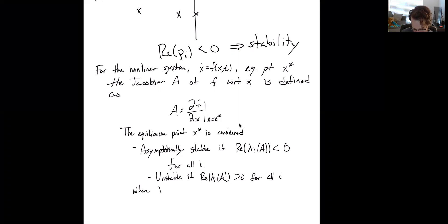Where lambda of A are the, is defined as the eigenvalues, the ith eigenvalue of A.